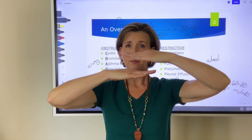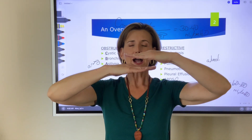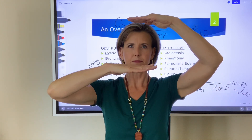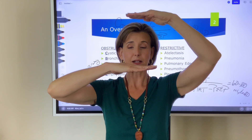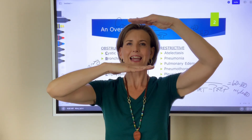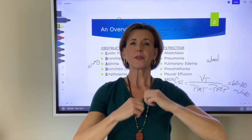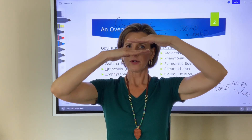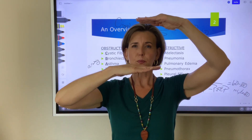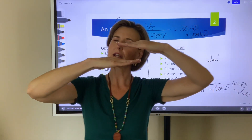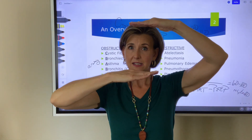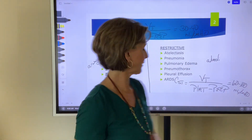If the peak inspiratory pressure rises independently of the plateau — meaning the plateau stays the same but the PIP is rising — the difference between the two indicates there is a problem in the airway. So: if PIP and plateau rise together, the problem is in the alveoli. If PIP rises but plateau stays the same, the problem is in the airway. A large difference between PIP and plateau means an airway resistance problem.